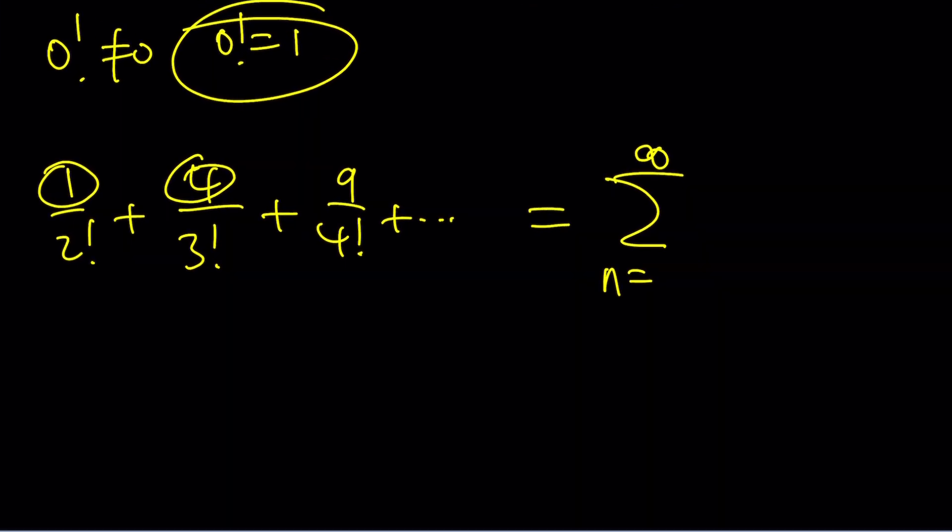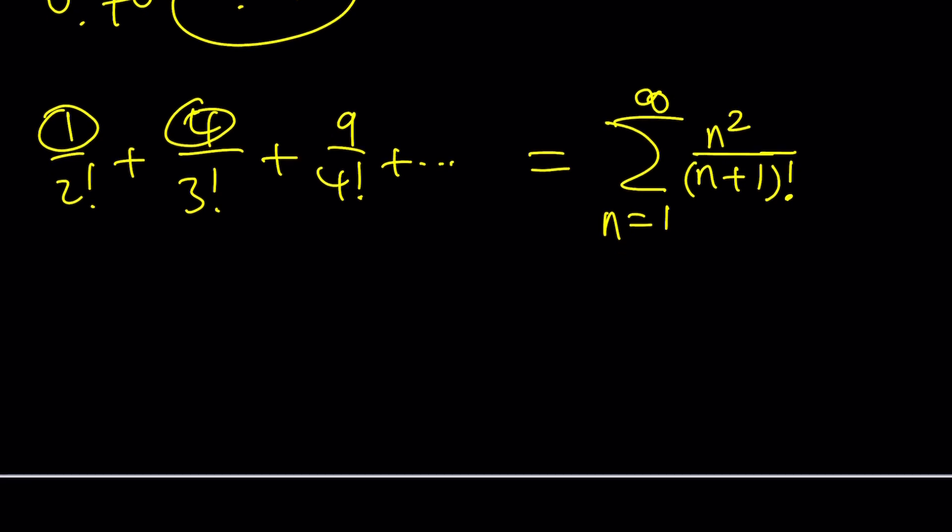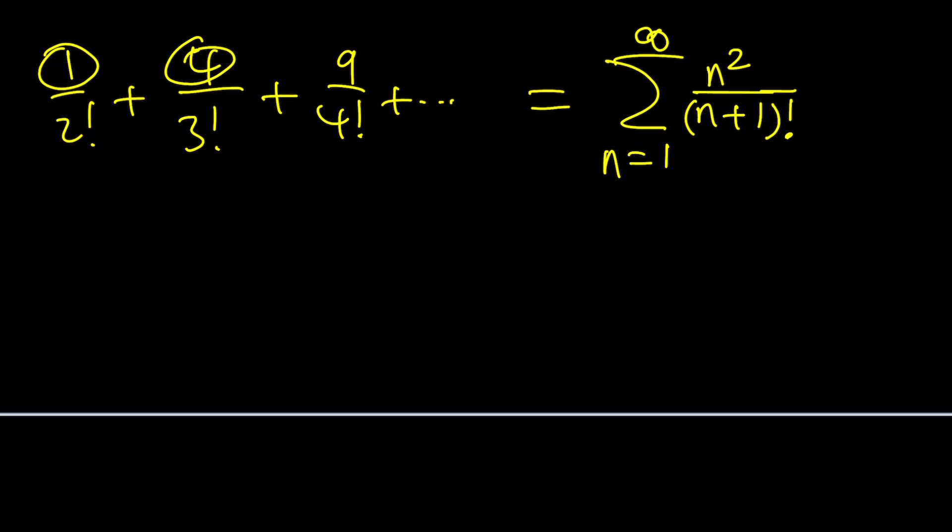Since the first term has 1 squared, we're going to have n squared in the numerator. But notice that the denominator is kind of 1 more than n. So in other words, it's n plus 1. And of course, n equals 1 is the first one. Easy, right? You just have to write it in sigma. And you may not get it right away, but at least—oh, by the way, I forgot the factorial. Let's not leave it like that, because those are factorials. And if you don't get it right the first time, that's perfectly fine. Just keep trying and don't give up.